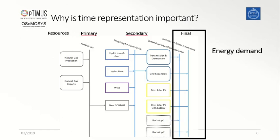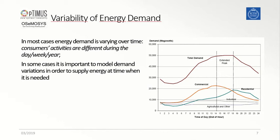For instance, focusing on the final demand side of the system, represented on the far right side of our reference energy system, it is known that the demand varies over time in accordance with the different activities that energy users do along the day, the week, and the different seasons of the year. On the graph on the right side of the slide, there is an example of how different types of energy demands, coming from different sectors, can vary differently along one day.